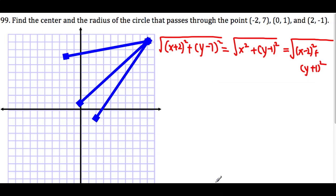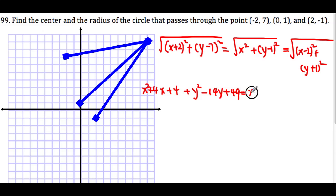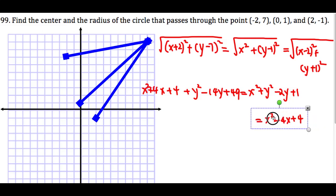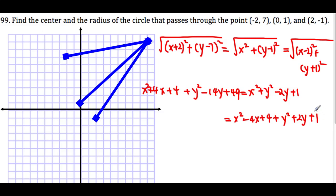What if we square all three sides and expand each parenthesis? The first one becomes x² + 4x + 4 + y² − 14y + 49, which equals x² + y² − 2y + 1. The last portion becomes x² − 4x + 4 plus y² + 2y + 1. We notice that x² and y² are common to all three, so we can cancel them.